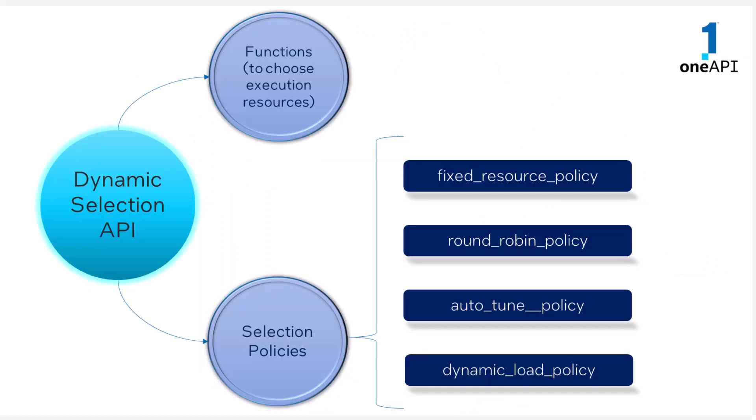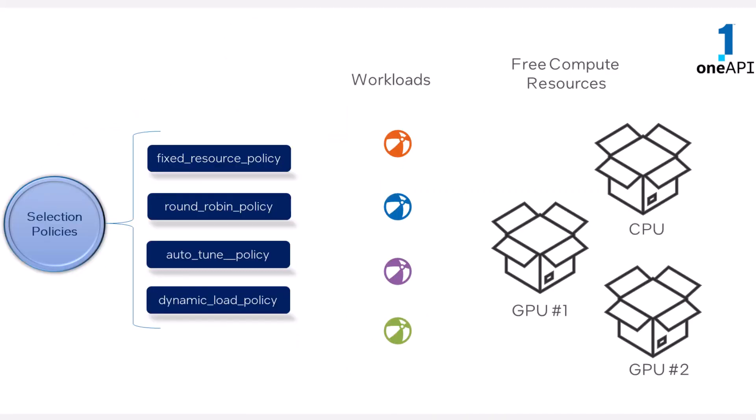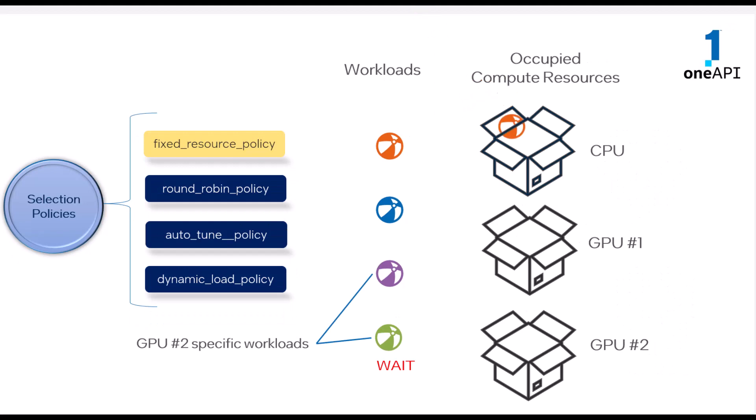An experimental yet important feature added to oneDPL version 2022.3 is the Dynamic Selection API. It lets you choose execution resources based on a particular selection policy. By default, it selects the SYCL queue as the compute resource. Let us understand how different selection policies work through an analogy of beach balls representing workloads being assigned to boxes representing compute resources.